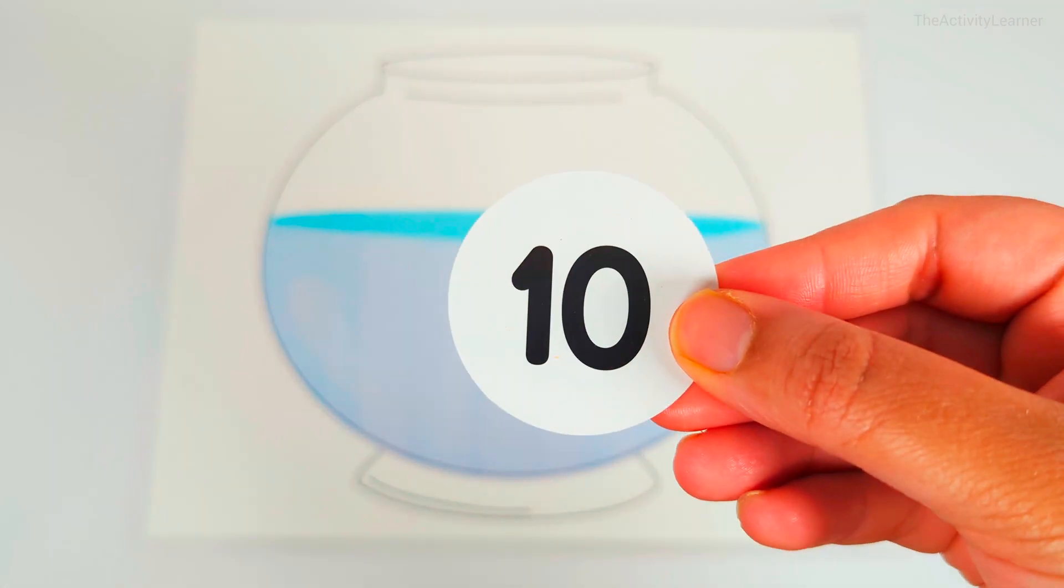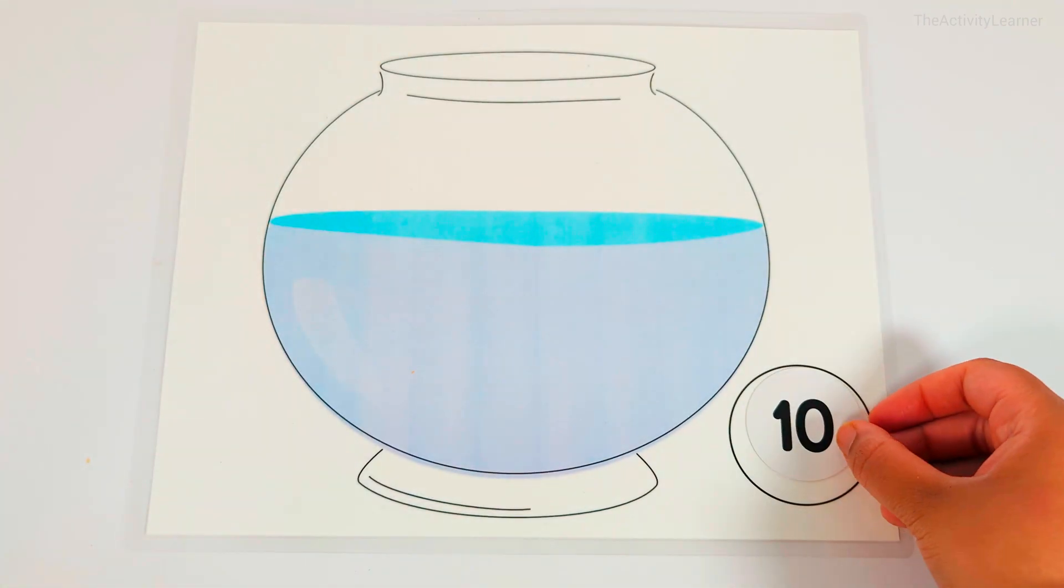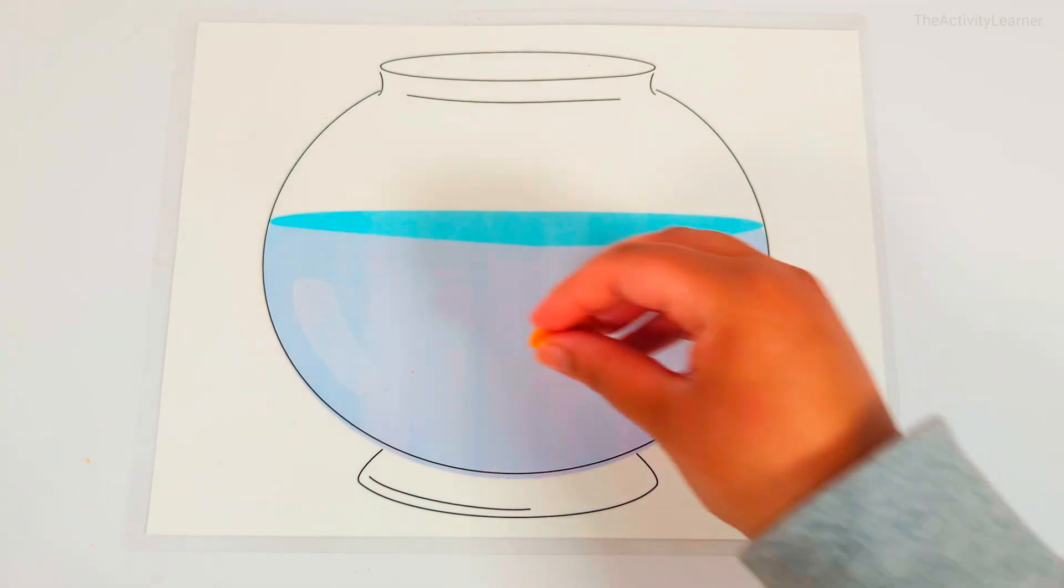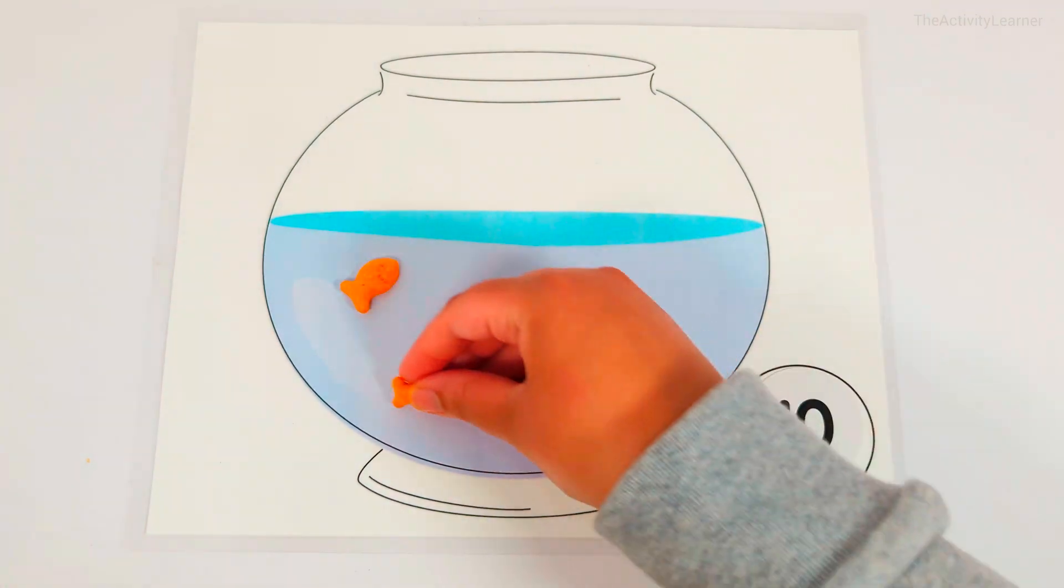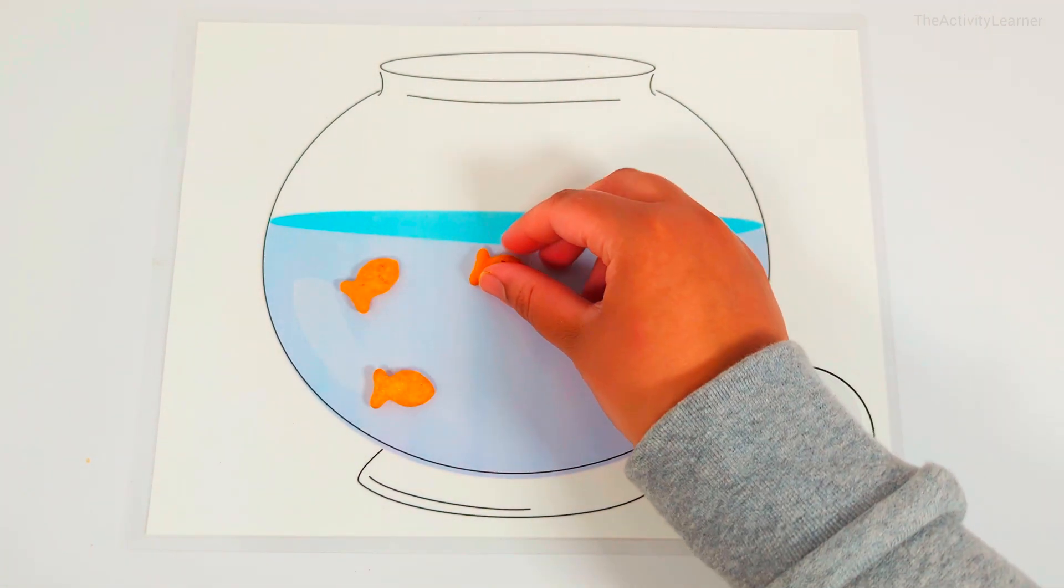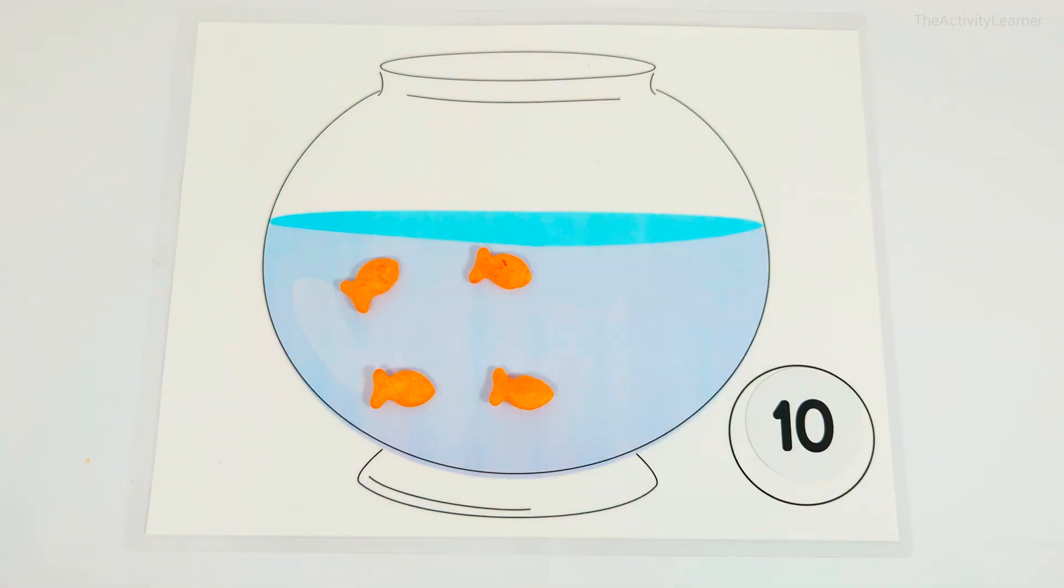Number ten. One, two, three, four, five, six, seven, eight, nine, ten. Ten goldfish.